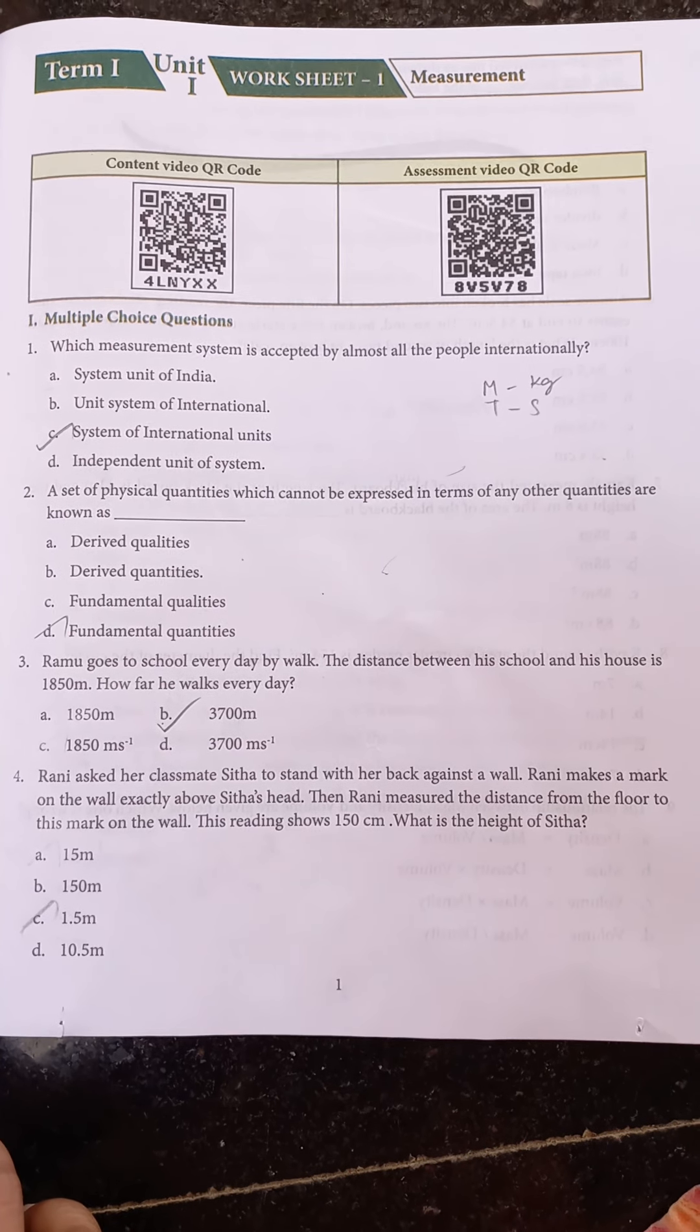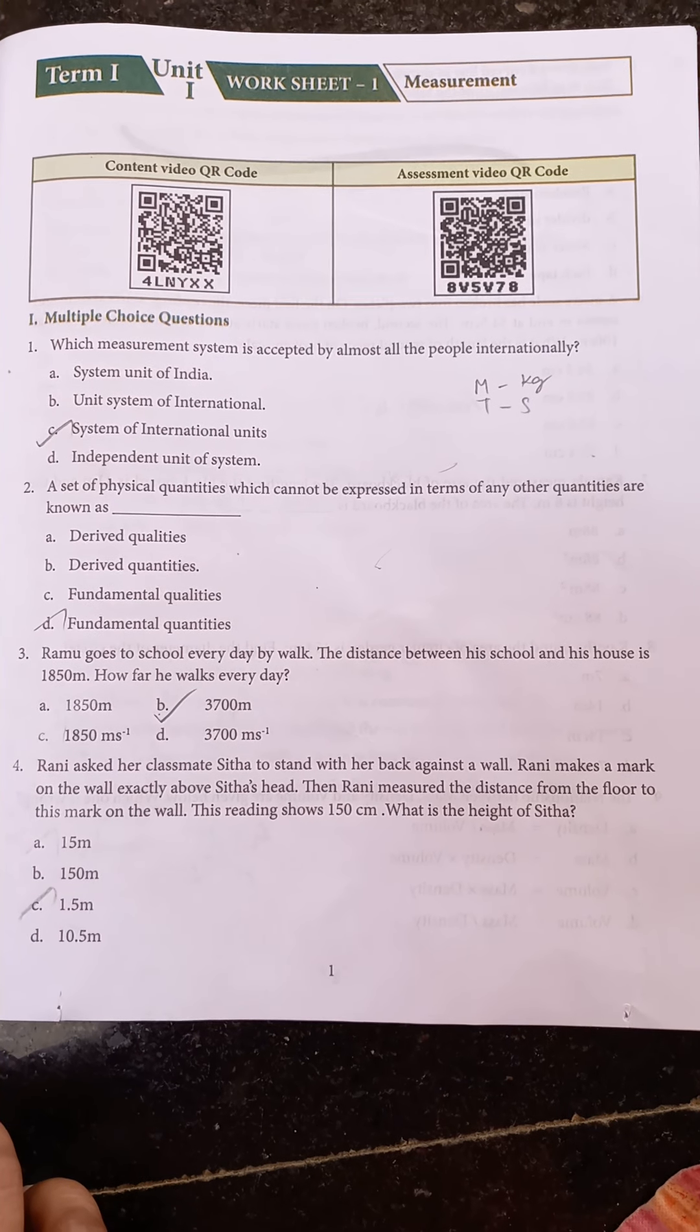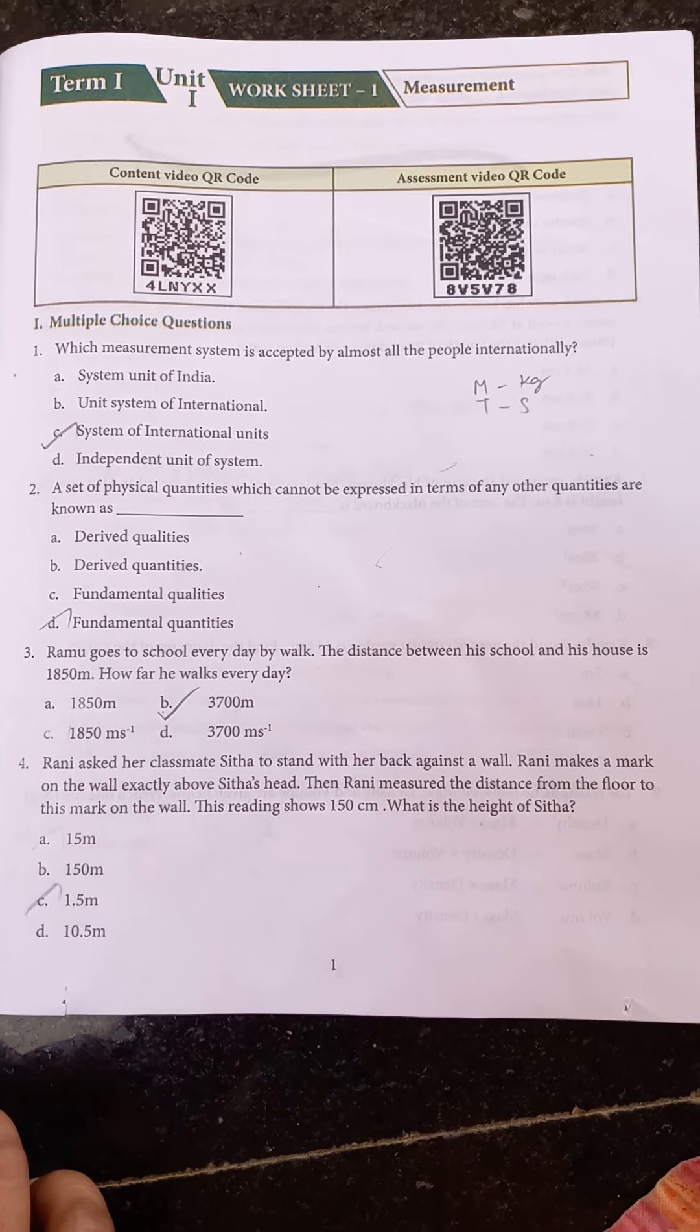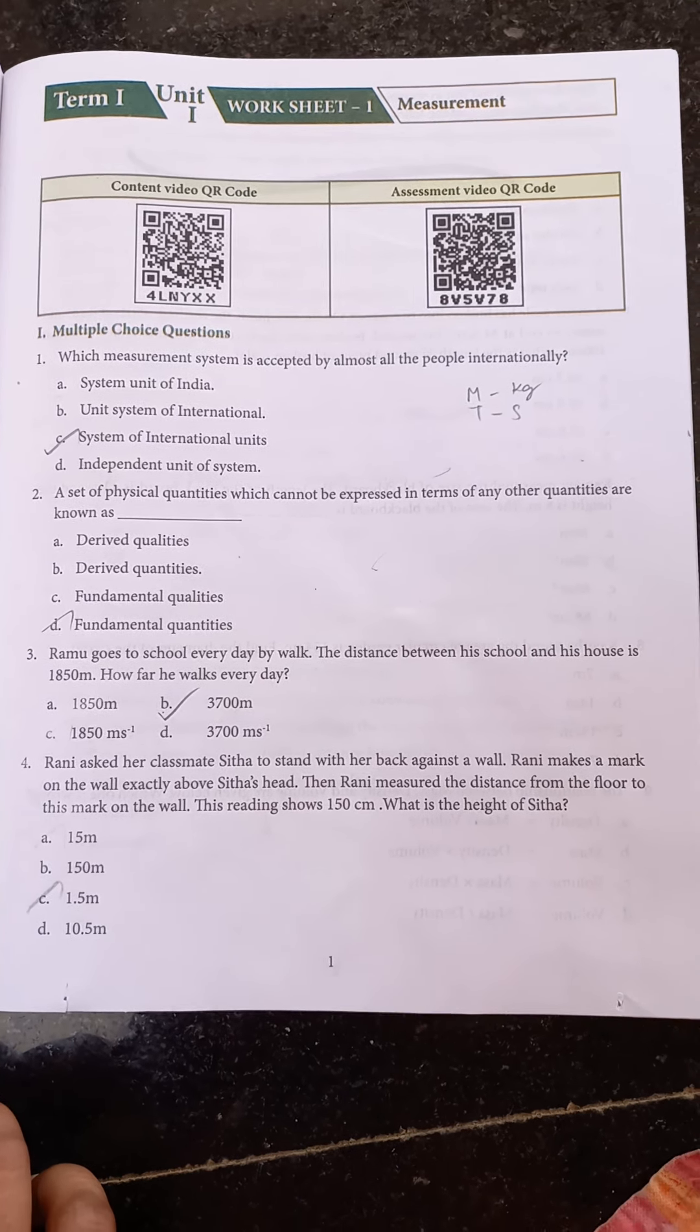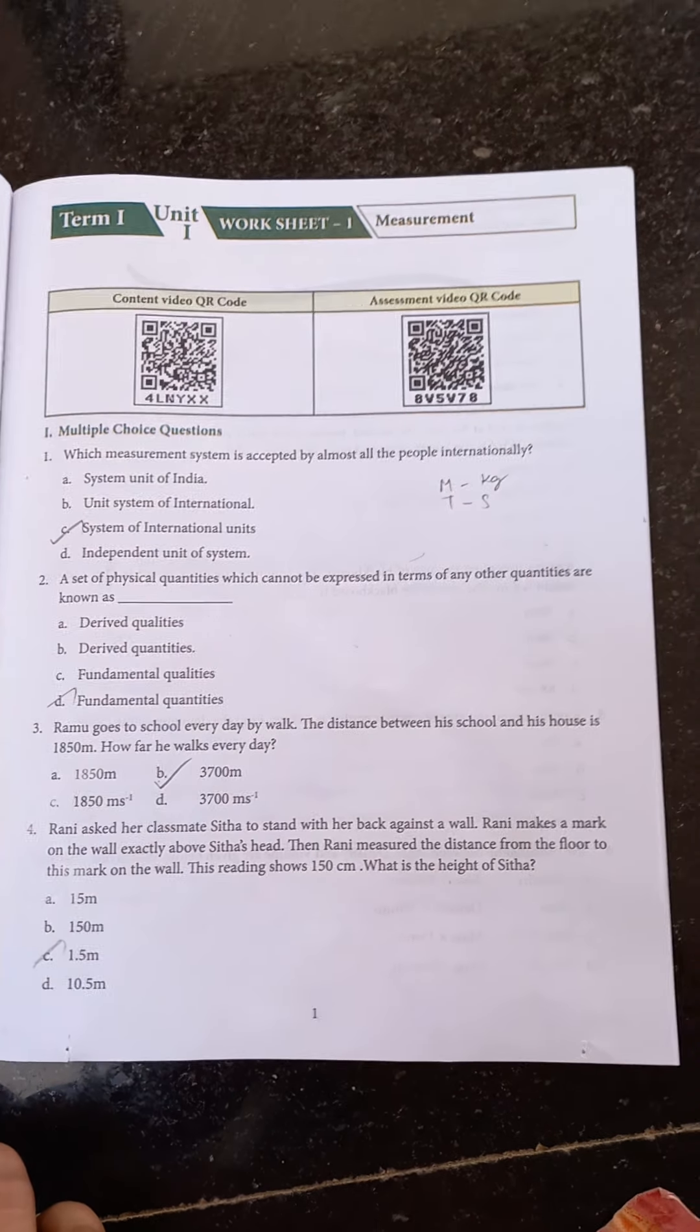The third question: Ramu goes to school every day by walk. The distance between his school and his house is 1850 meters. How far he walks every day? Option B is the answer, 3700 meters.